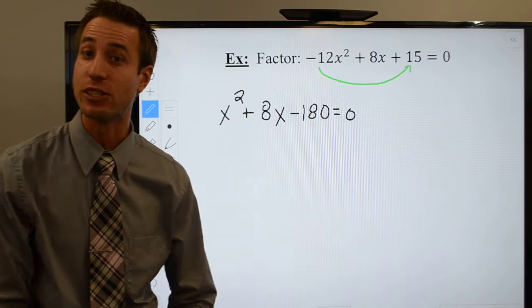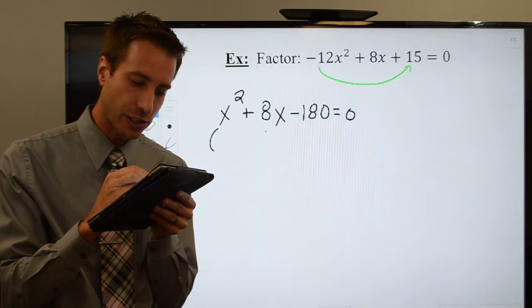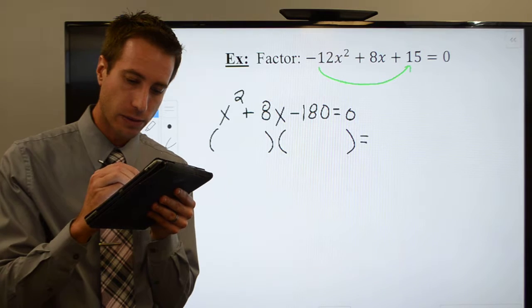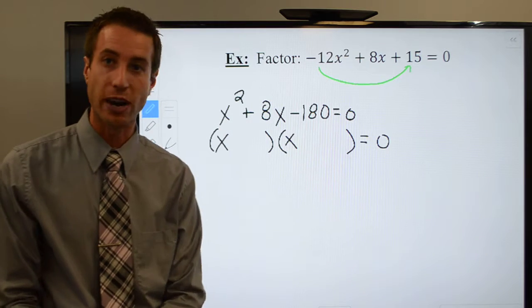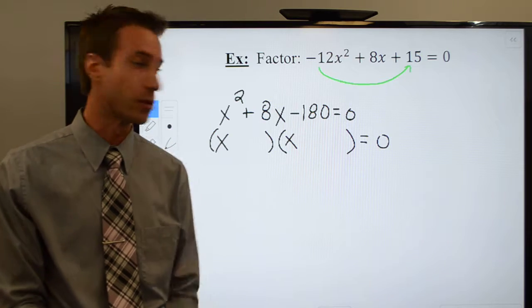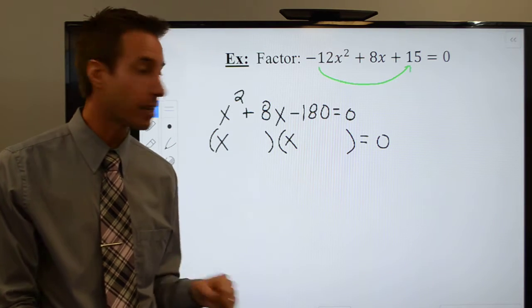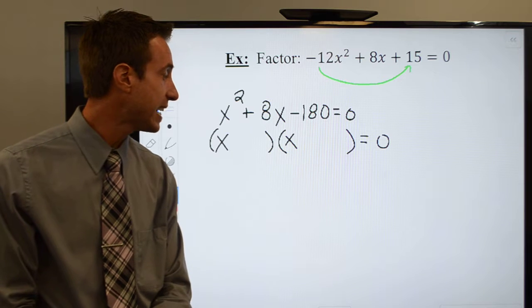Because this leading coefficient is a 1. I know that I just need two binomials. I need an x and an x, because that's what gives me x squared. And now all I need are two numbers that multiply to a negative 180 and sum to a positive 8.